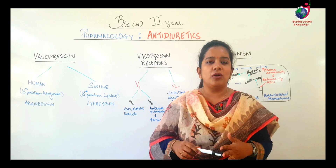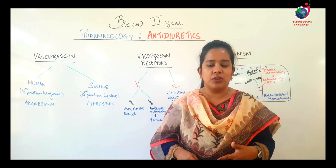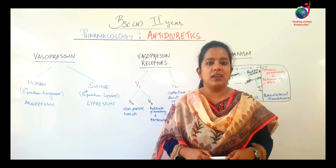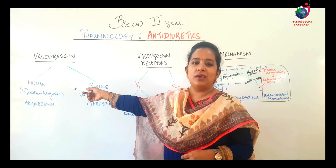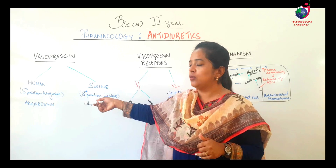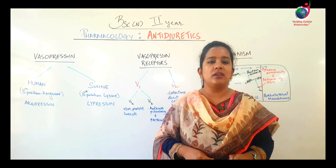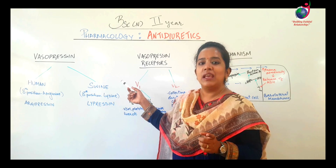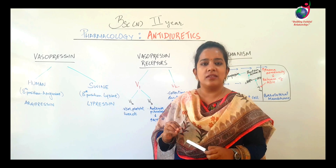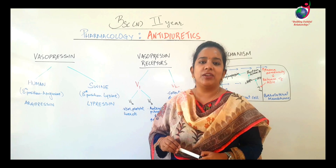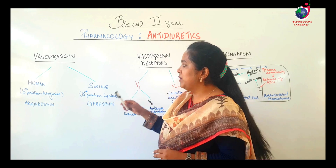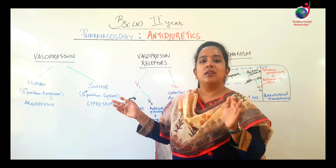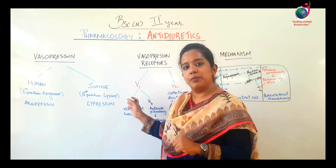In our body, there is a naturally occurring anti-diuretic hormone secreted from the posterior pituitary — we can call it vasopressin. Vasopressin is secreted in humans as well as in swine. Because vasopressin from swine is also a derivative used for human administration, we take only two organism classes: human beings and swine.